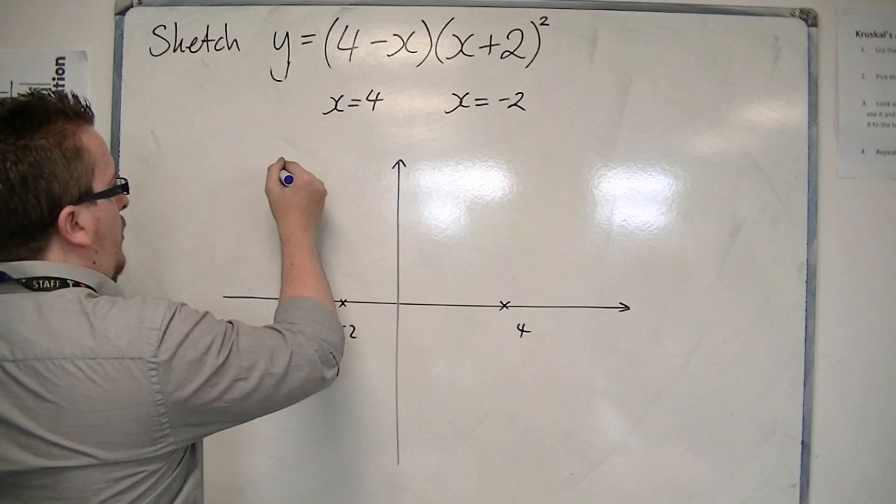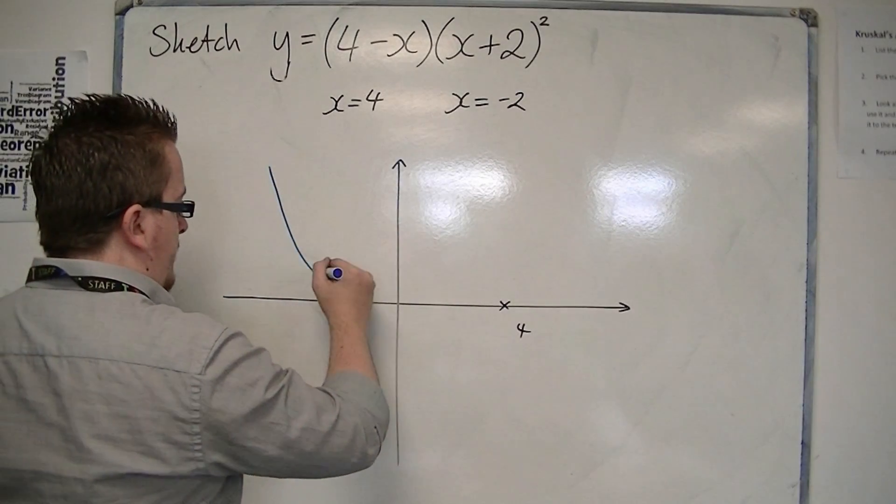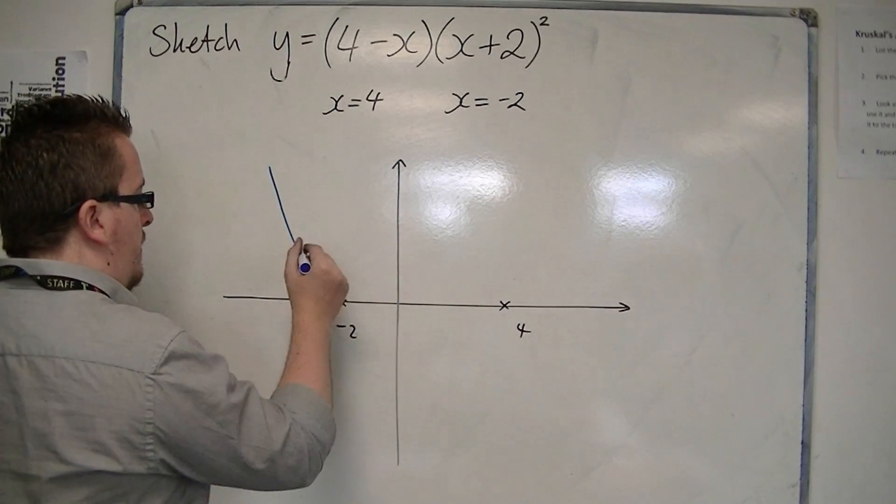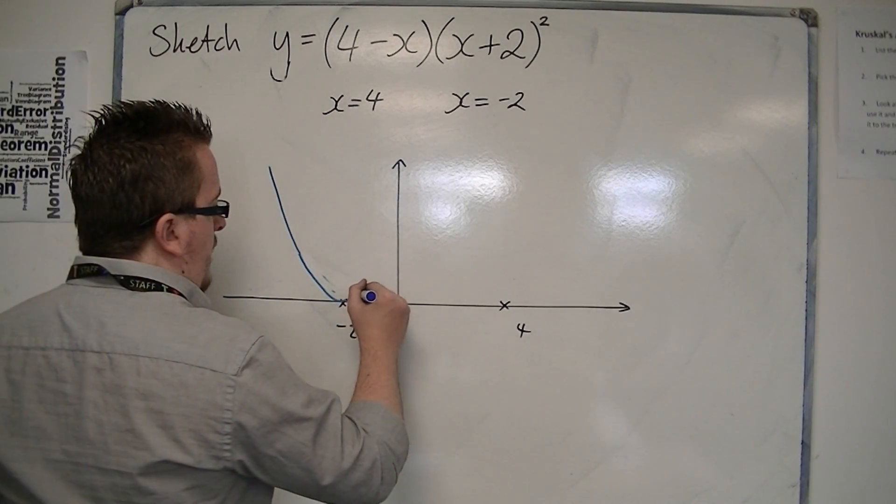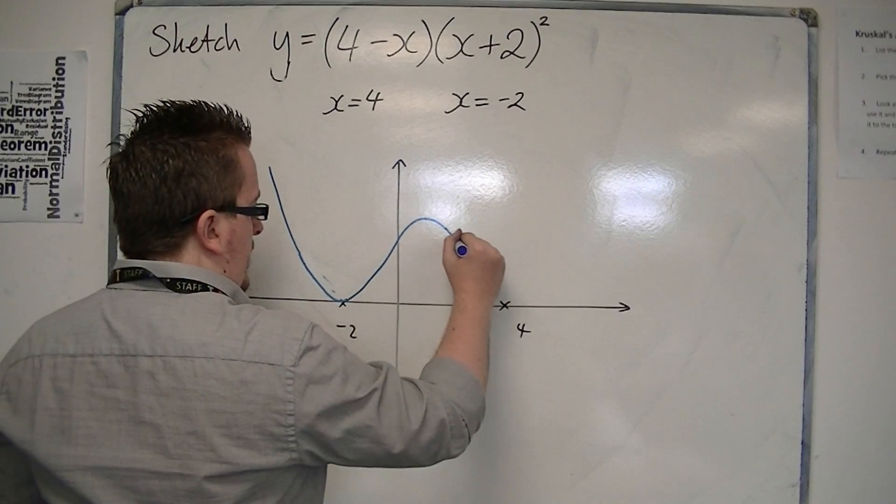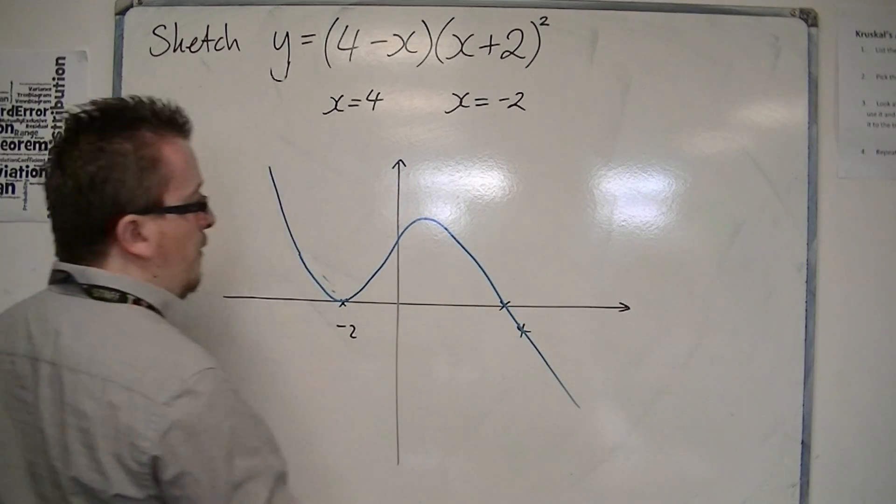We come in from the top left, and in getting to minus 2, we're only going to touch minus 2 at one point. Then we cross the y-axis and then back down through 4.